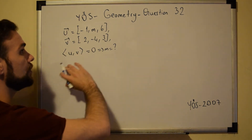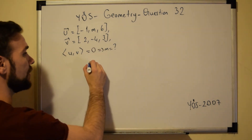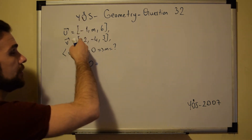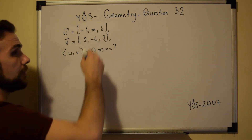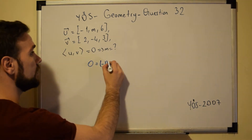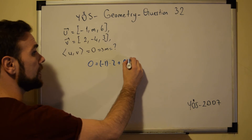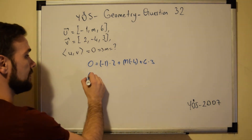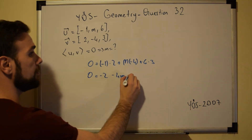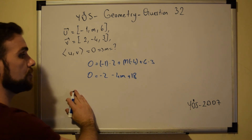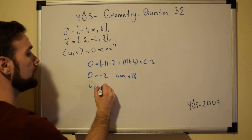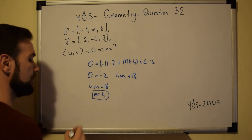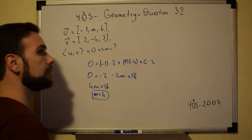Now that we know this, we can easily solve for M. We have 0 which is equal to: when we multiply two vectors, we take the product of the first numbers plus the product of the second numbers plus the product of the third numbers. So we have minus 1 times 2, plus M times minus 4, plus 6 times 3. That gives us 0 equals minus 2, minus 4M, plus 18. Moving unknowns to one side: 4M equals minus 2 plus 18, which is 16. So M is equal to 4.